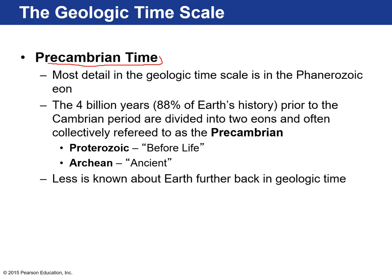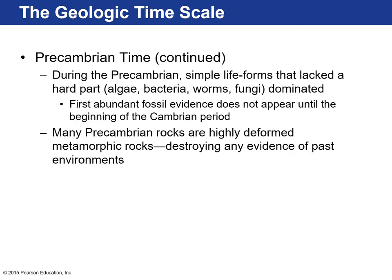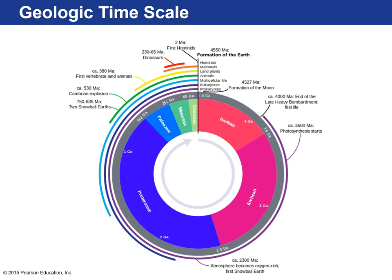Before the Phanerozoic is the Precambrian, which represents about 88% of earth's history — roughly four billion years. We know very little about it because there are no fossils, and the rocks are very old and weathered. During the Precambrian, single-celled bacteria and algae dominated. One fossil we do find is stromatolites — single-celled photosynthesizing bacteria that lived in shallow parts of the ocean.